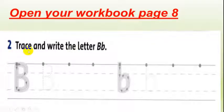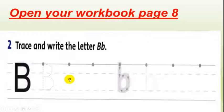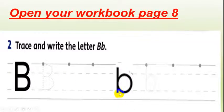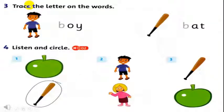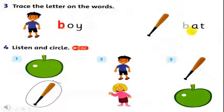Exercise 2: trace and write the letter B. These are examples — the rest you do at home. Number 3: trace the letter on the words. It's an example — the others you do at home.